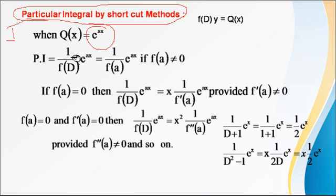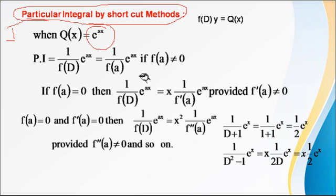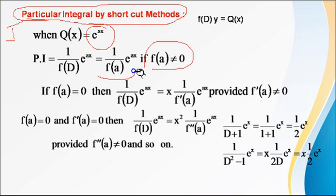PI equals 1 upon f(D) into Q(x). In this case Q(x) is e raised to ax. In this method, we simply replace D with the coefficient of x. So the coefficient of x is a — we put D equal to a, when f(a) is not equal to 0, that is, when the denominator is not equal to 0.